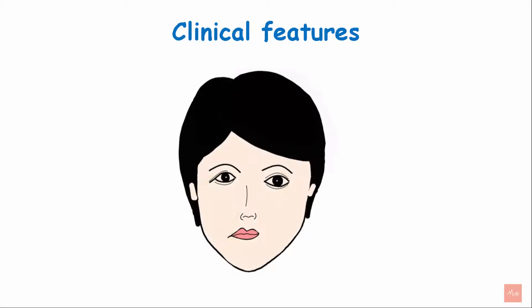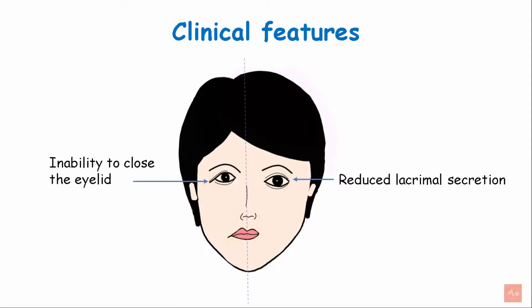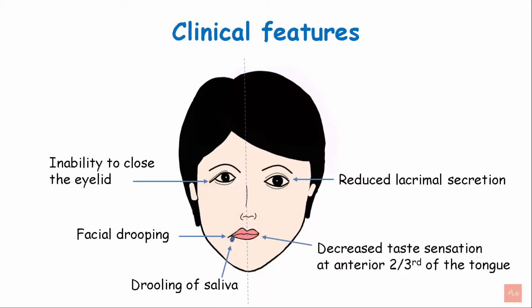The clinical features include unilateral affection of the face with asymmetry, such as inability to close the eyelid, reduced lacrimal secretions, facial drooping, drooling of saliva, and decreased taste sensation at the anterior two-thirds of the tongue.